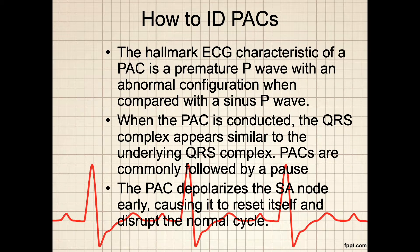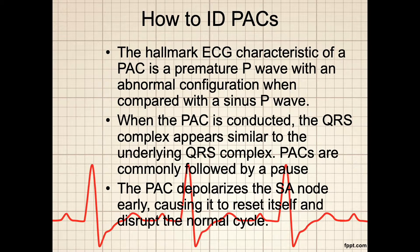As you review your rhythm strip, you should learn how to identify the PAC. The hallmark EKG characteristic of a PAC is a premature P-wave with an abnormal configuration when compared with the sinus P-wave. When the PAC is conducted, the QRS complex appears similar to the underlying QRS complex. PACs are commonly followed by a pause. The PAC depolarizes the SA node early, causing it to reset itself and disrupt the normal cycle. When examining a PAC on an EKG, look for irregular atrial and ventricular rates. The underlying rhythm is usually regular, and an irregular rhythm results from the PAC and its corresponding pause. The P-wave is premature and abnormally shaped and may be lost in the previous T-wave, distorting that wave's configuration. That is, the T-wave might be bigger or have an extra bump. Varying configurations of the P-wave indicate more than one ectopic site.